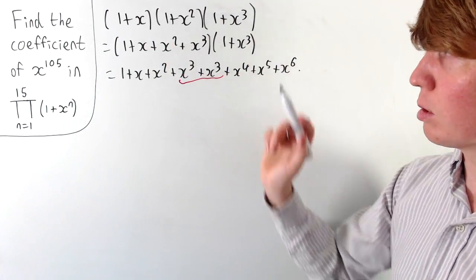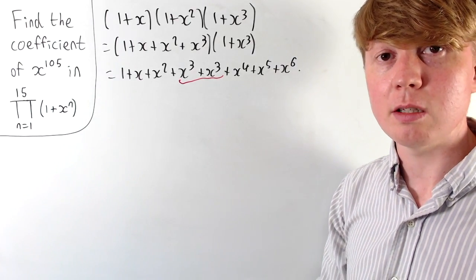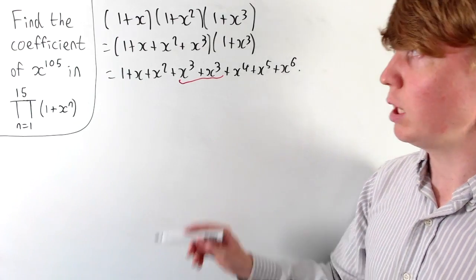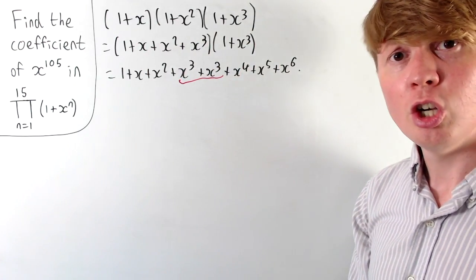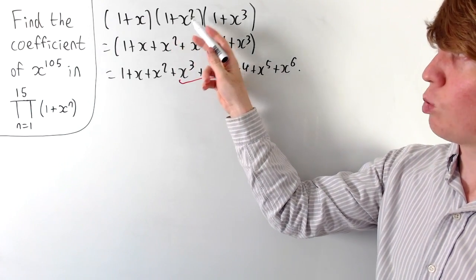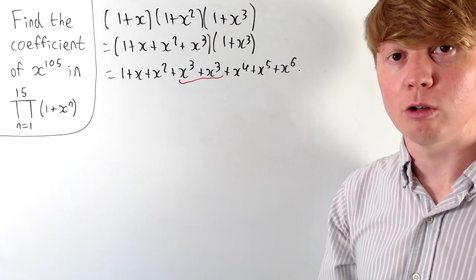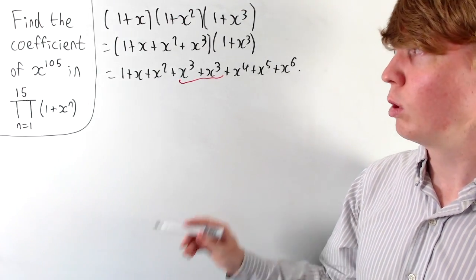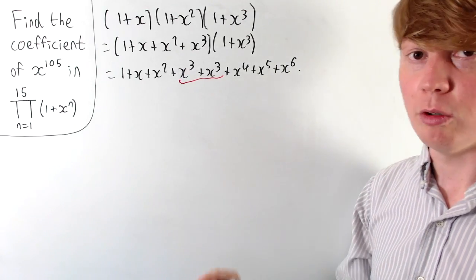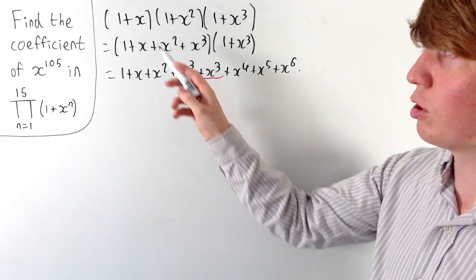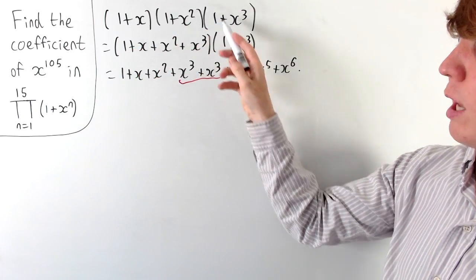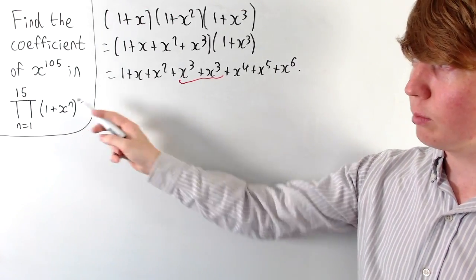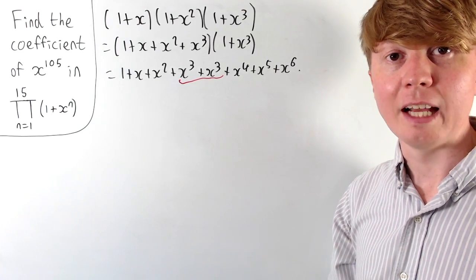If we think back to the original brackets we were expanding, we can understand this as there being two different ways of multiplying terms together to get a power of 3. We could do 1 times 1 times x cubed, or we could do x times x squared times 1. So there are two ways of getting a power of 3, and this is the same as saying the coefficient of x cubed is 2. Whereas for x to the power of 2, there's only one way — you have to do 1 times x squared times 1.